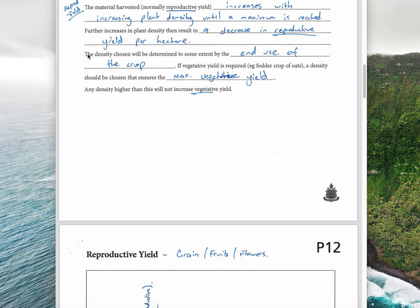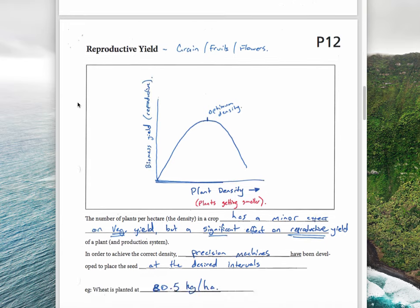The density chosen will be determined to some extent by the end use of the crop. If vegetative yield is required, for example a fodder or feed crop of oats for animals, a density should be chosen that ensures the maximum vegetative yield. Any density higher than this will not increase vegetative yields.